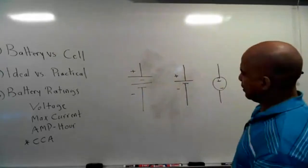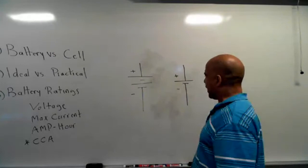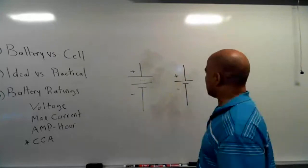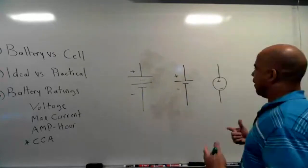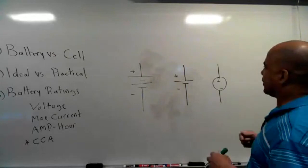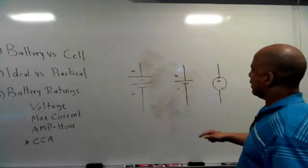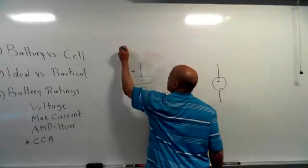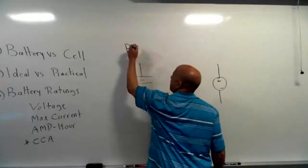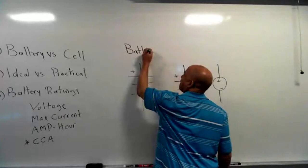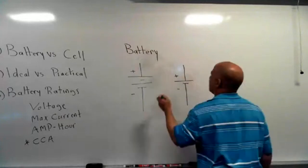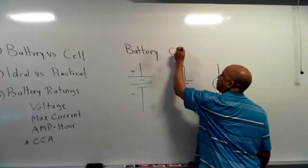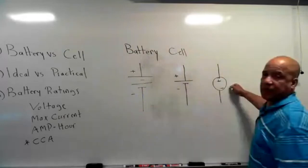From the second or third week of class, I said you can use all these interchangeably — I don't care. Up until today, they're all the same. But in reality, these two are different. The one on the left is called the battery, and the one on the right is called the cell. The circle can represent either one.